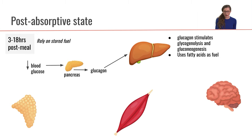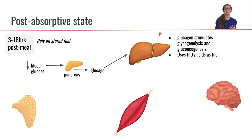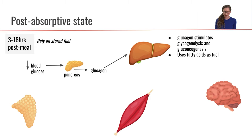Glucagon is also going to be stimulating gluconeogenesis in the liver. So glucagon is going to stimulate us to build more glucose in the liver and then release that glucose out into the bloodstream, again, to bring our blood glucose concentration back up to a nice homeostatic, comfortable level.